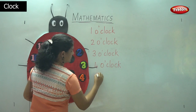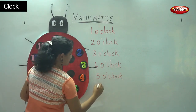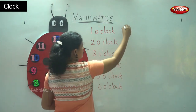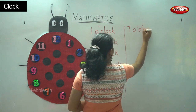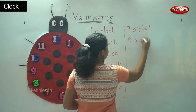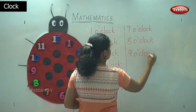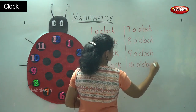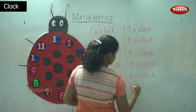For 5 o'clock, when it is 6 o'clock, when it is 7 o'clock, when it is 8 o'clock, when it is 9 o'clock, when it is 10 o'clock, when it is 11 o'clock, and when it is 12 o'clock.